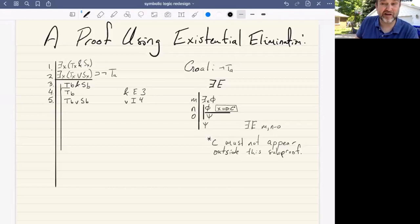And now we can use our existential introduction rule because we know if B is both T or S, that something must be T or S. So we can assert that there exists some X such that X is T or X is S. And that will be via existential introduction from five.